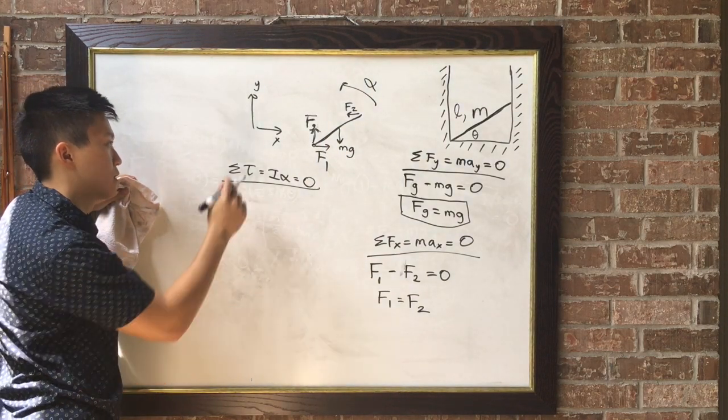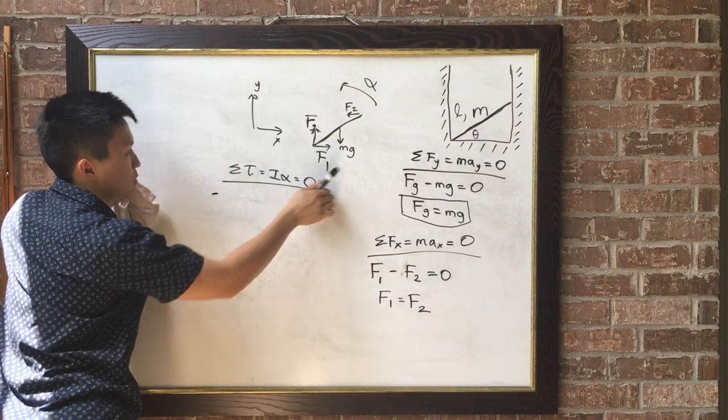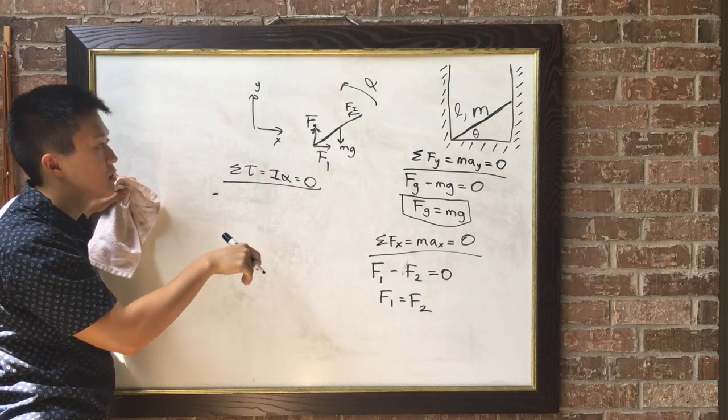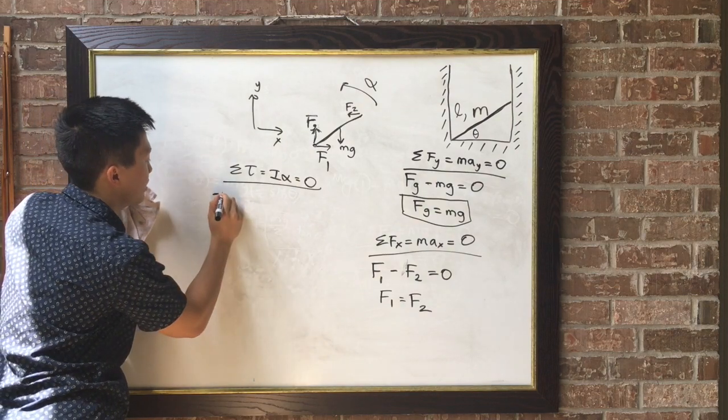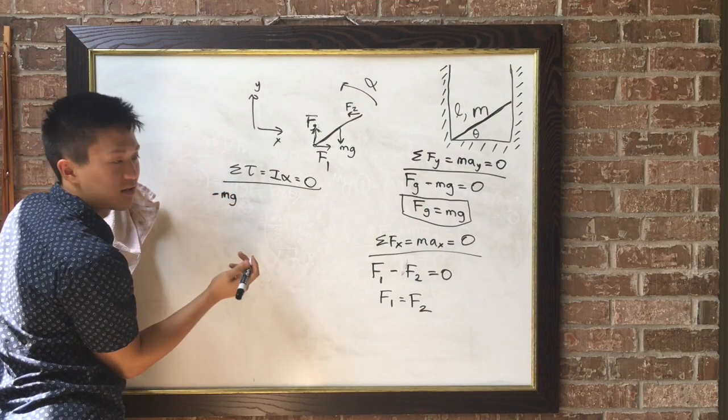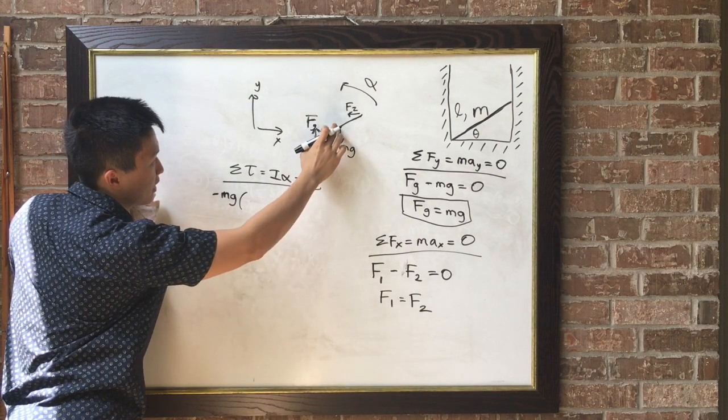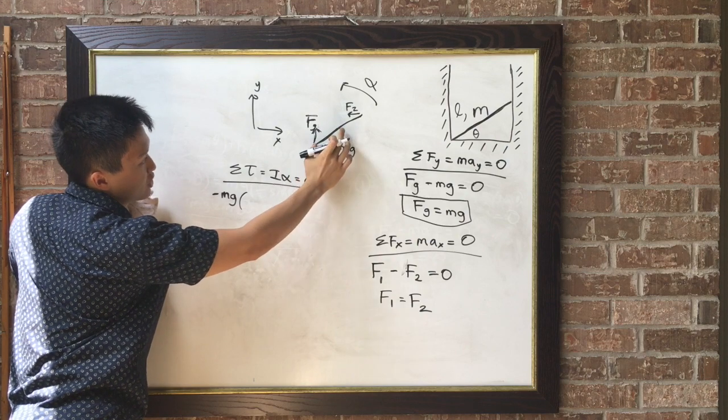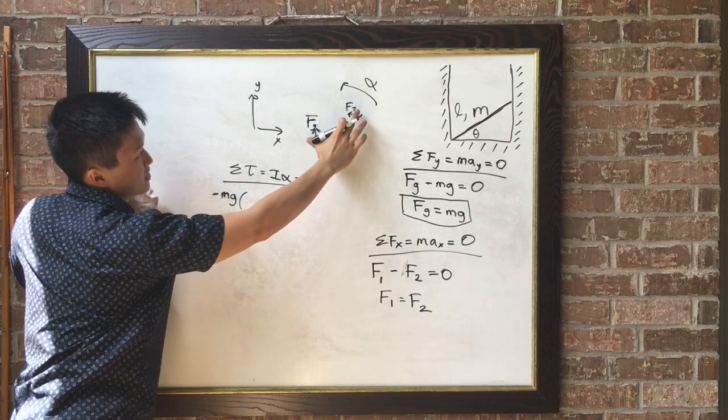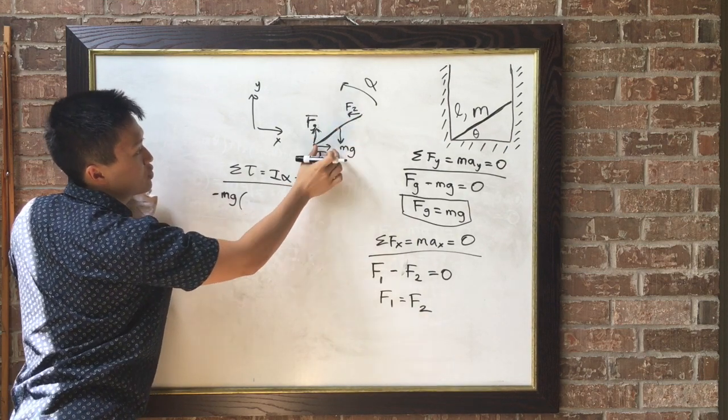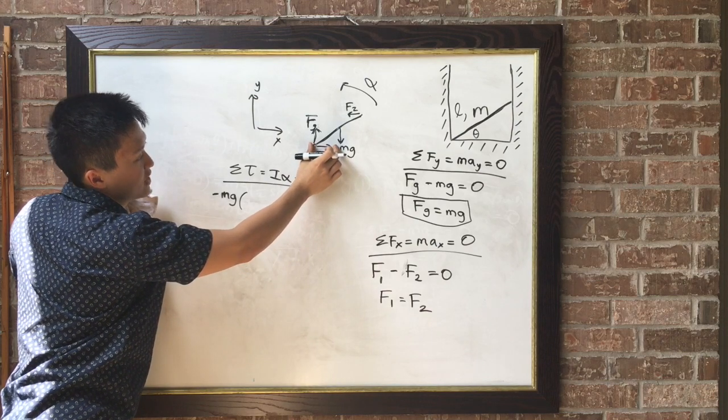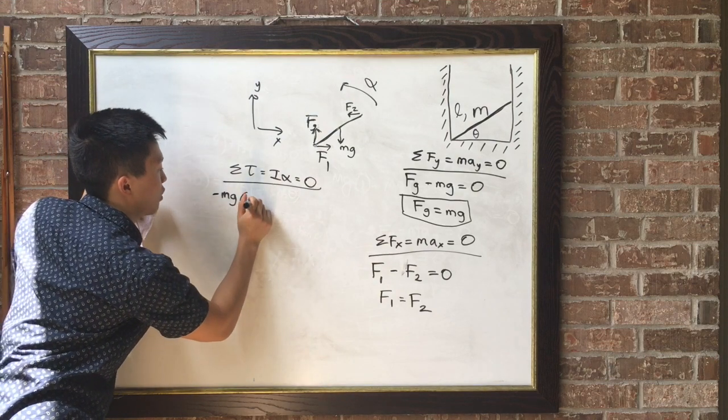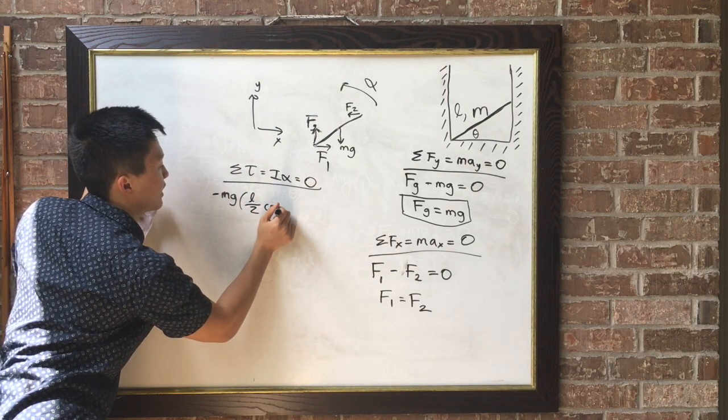then we'll say the torques by this mg will make the stick go in a clockwise direction. So negative mg, force times lever arm, the lever arm will be this distance, which is L over 2, since this whole thing is L, L over 2 times adjacent over hypotenuse cosine theta. The quantity L over 2 cosine theta,